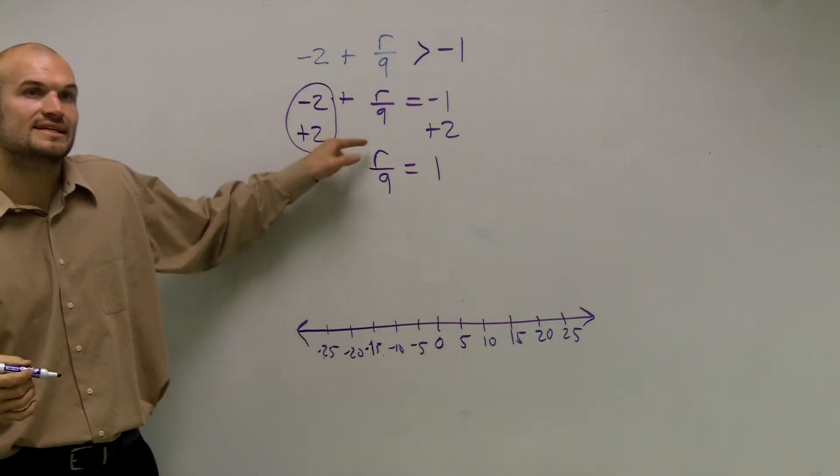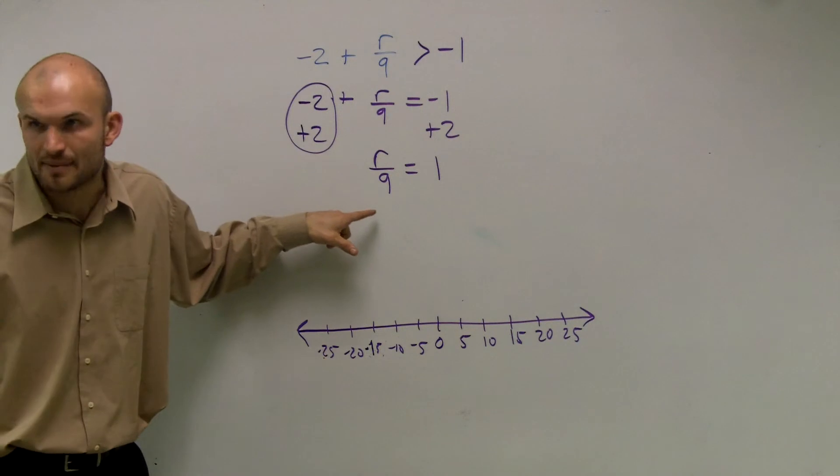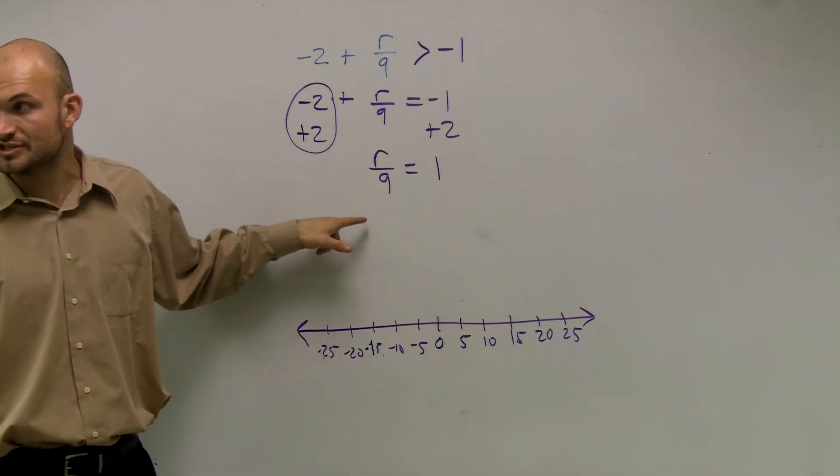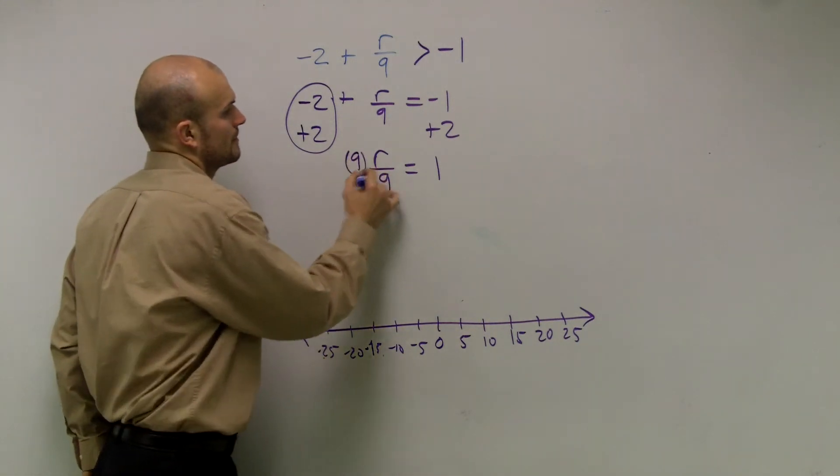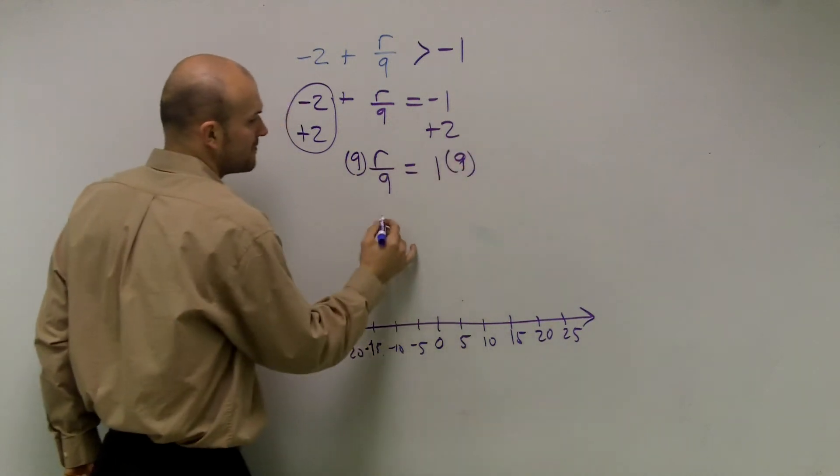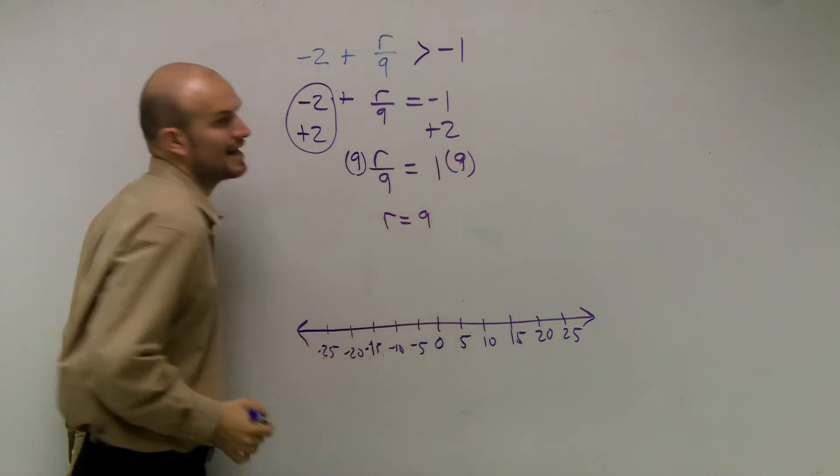Then the next thing is, now my variable is being divided by 9. So to undo division, I need to multiply. Therefore, r equals 9.